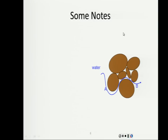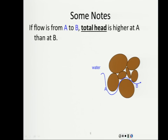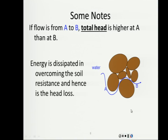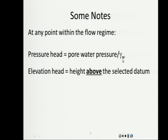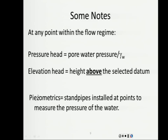As a refresher: if flow goes from A to B, the total head at A must be greater than at B, because energy at A has to be greater than at B. There is friction between A and B, so energy is dissipated as the fluid flows from A to B. At any point in the flow regime, pressure head is pore water pressure divided by gamma-water, and elevation head is height above the selected datum.